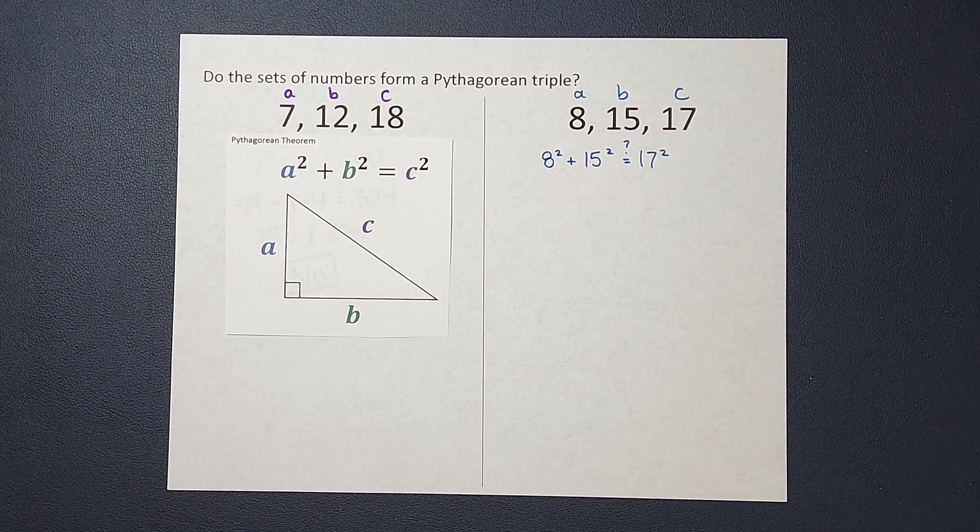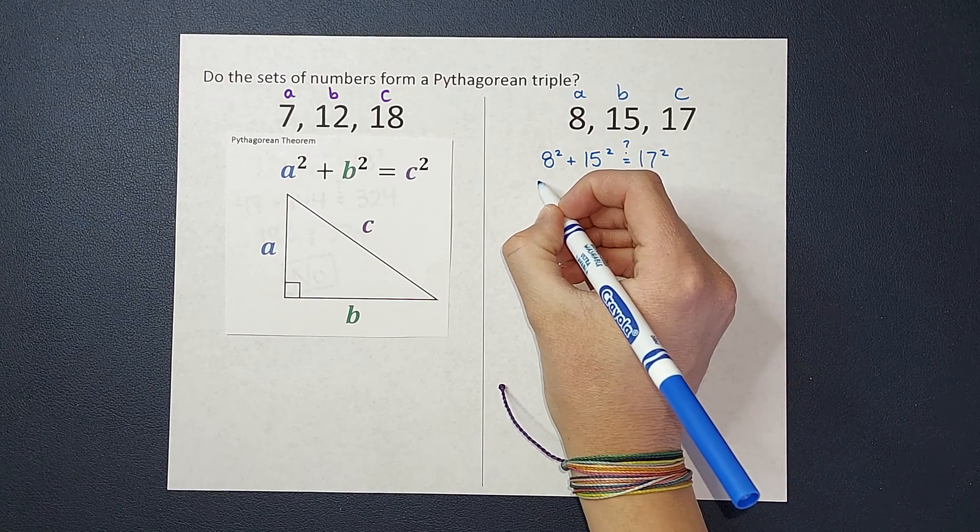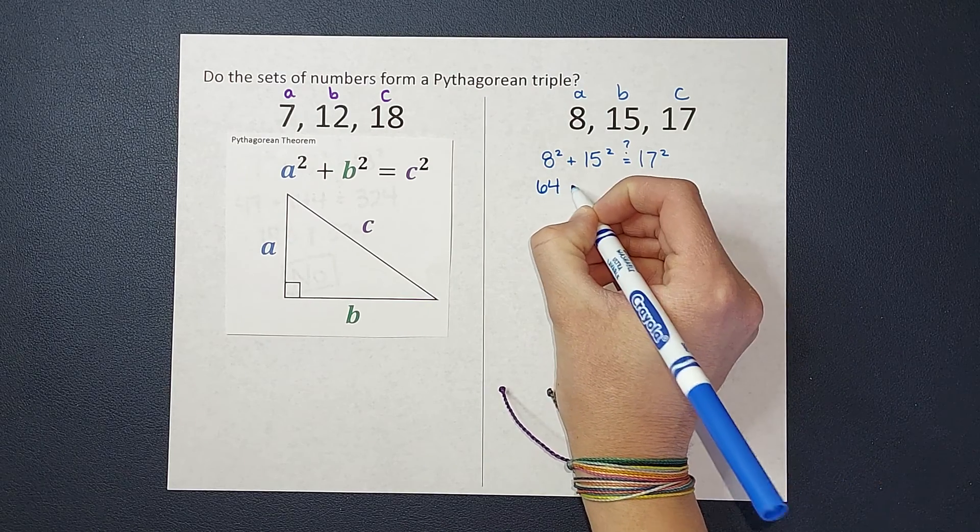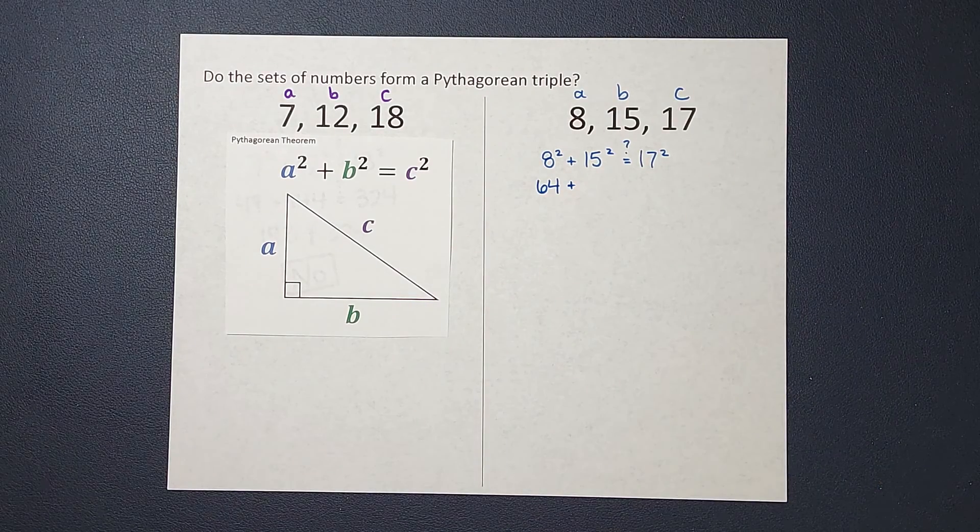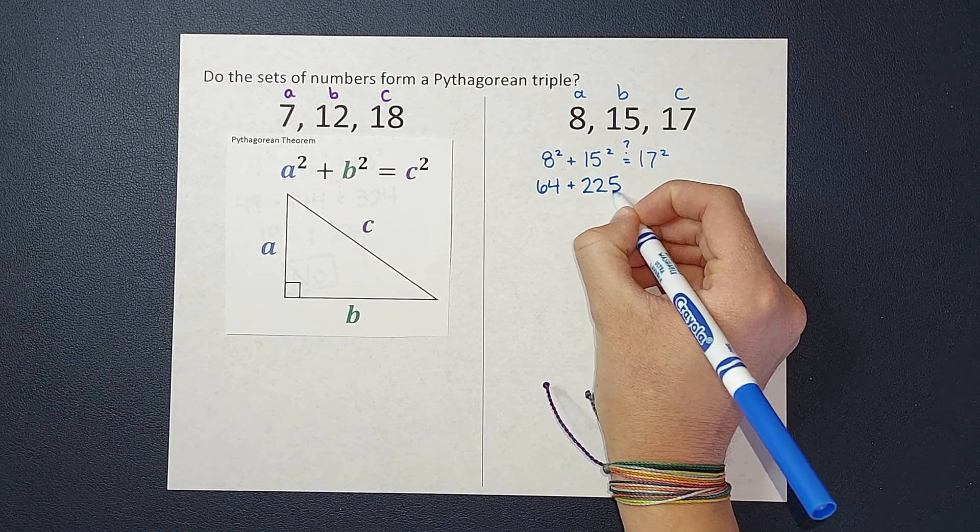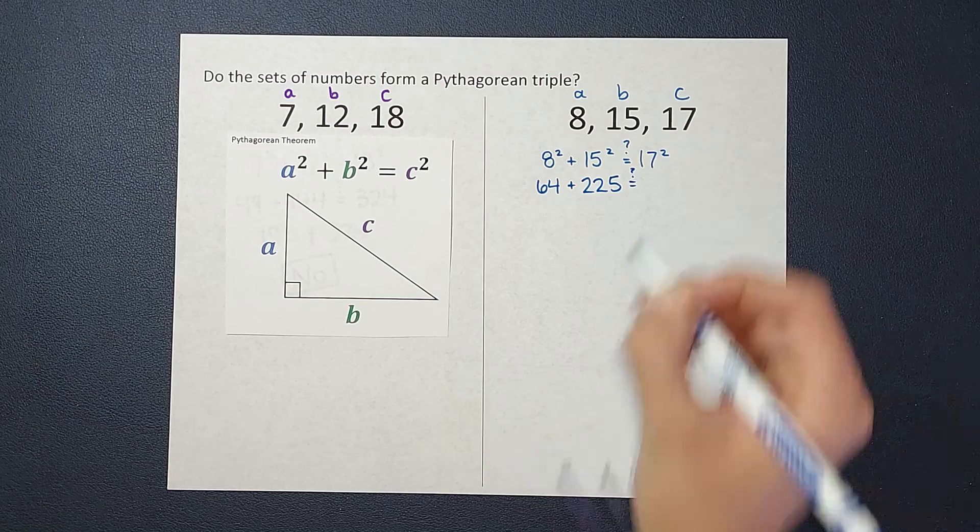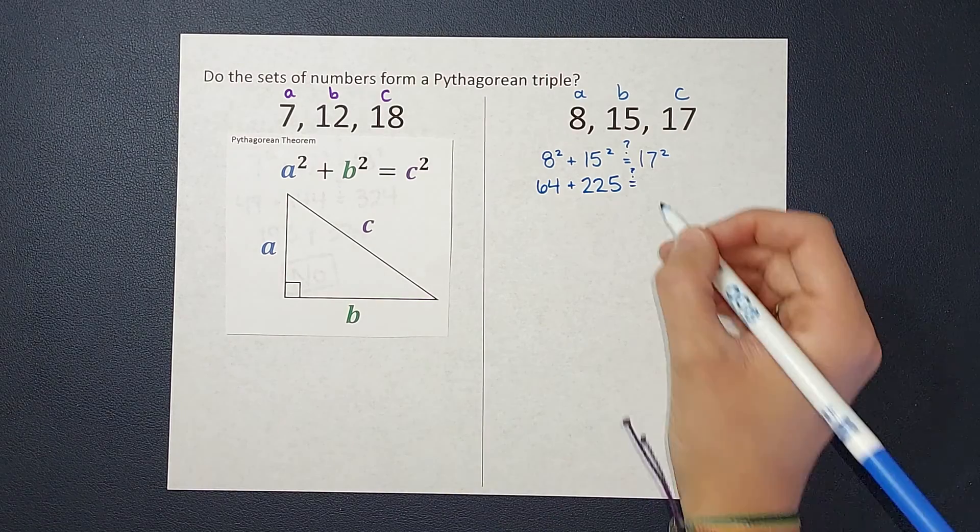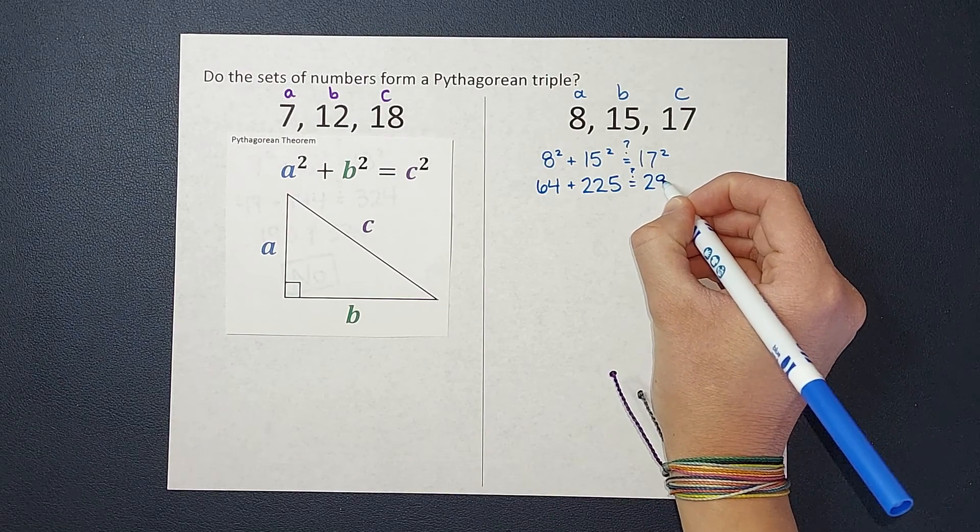Let's go ahead and simplify down. 8 squared is 8 times 8, which gives me 64, plus 15 squared, which gives me 225. We're seeing if that is equal to 17 squared, which is 289.